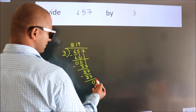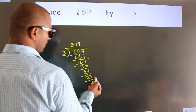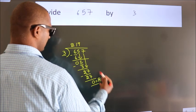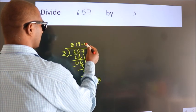After this, no more numbers to bring it down, so we stop here. This is our remainder, this is our quotient.